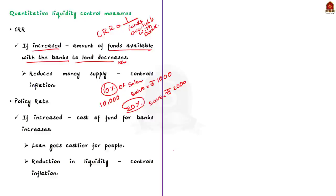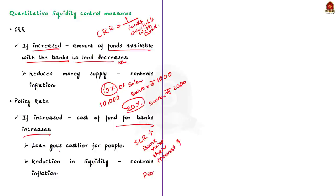If the repo rate increases, it increases the cost of funds for banks — the interest rate banks have to pay to RBI. As funds get costlier, banks increase the interest rate to customers. When interest rates get higher, borrowing in the economy comes down automatically. This in turn reduces liquidity in the economy and controls inflation. This is how RBI controls inflation by tweaking policy rates and reserve rates.